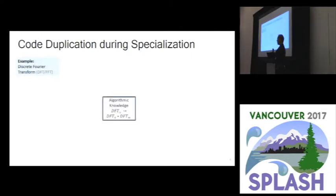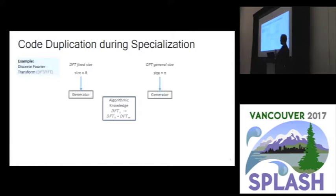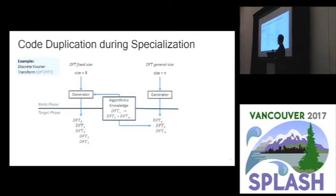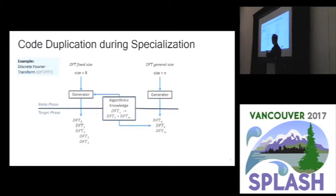With the FFT you have algorithmic knowledge — namely that you can decompose a DFT of size N into smaller DFTs of size K and M. What's particular about this is that depending on the knowledge you have while generating code, the application of the algorithmic knowledge vastly differs. In the case where you have knowledge of the size of the DFT, you can apply this rule already during code generation and fully decompose the recursion at code generation time, specializing on the size. If on the other hand you don't know the input size N, you have to delay the divide-and-conquer decomposition to the target code, and also need to implement all the infrastructure to do so in the generated code.